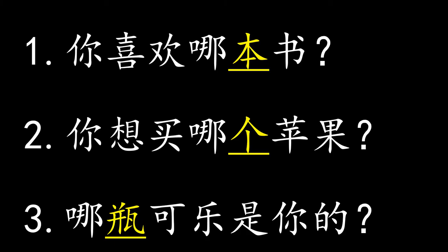From these three questions, we know that after the question word 哪, there must be a measure word at the back. For example: 哪本, 哪个, 哪瓶.